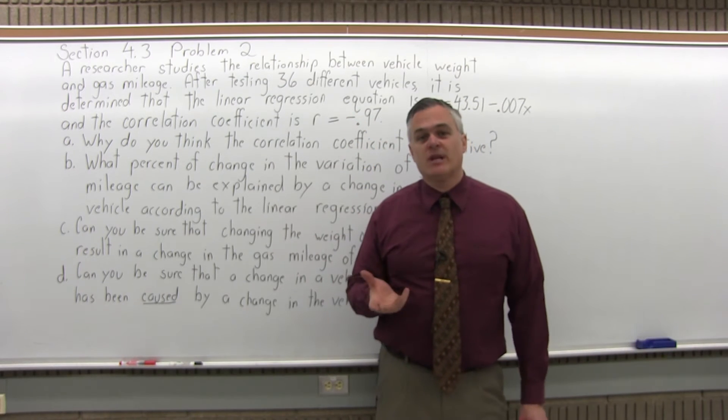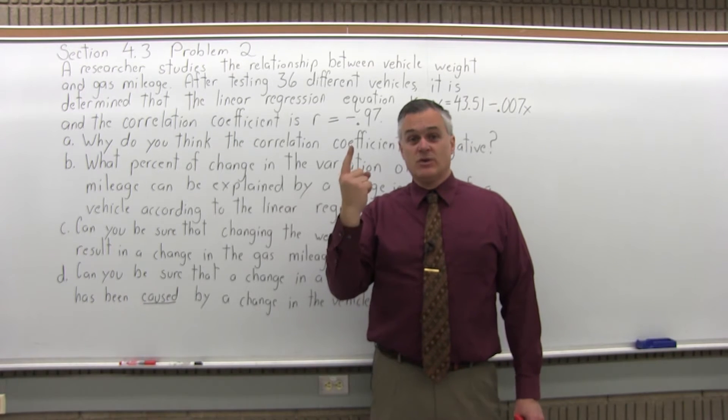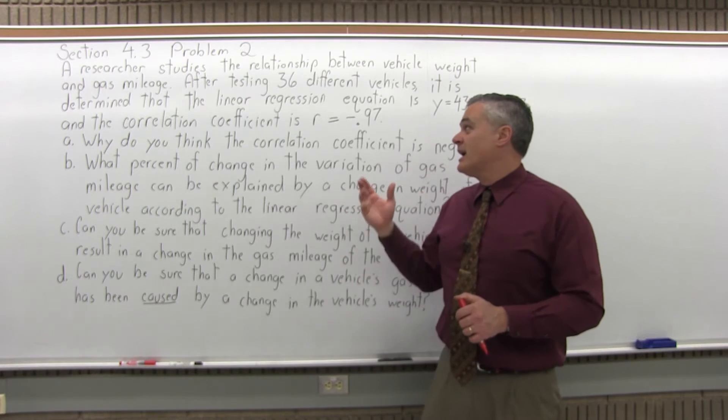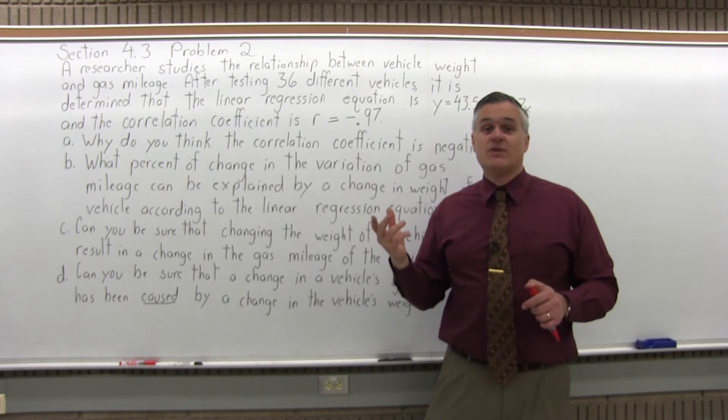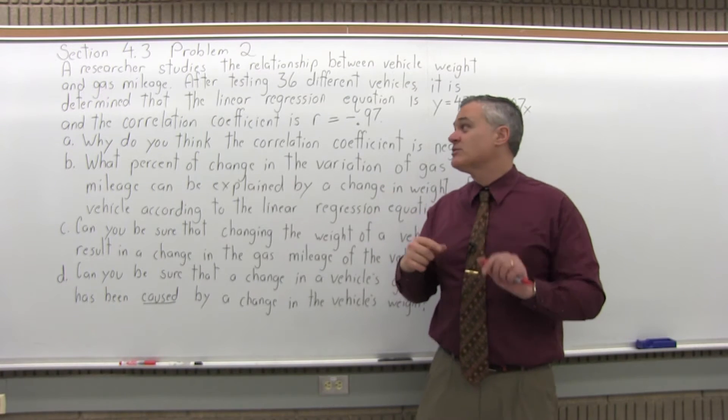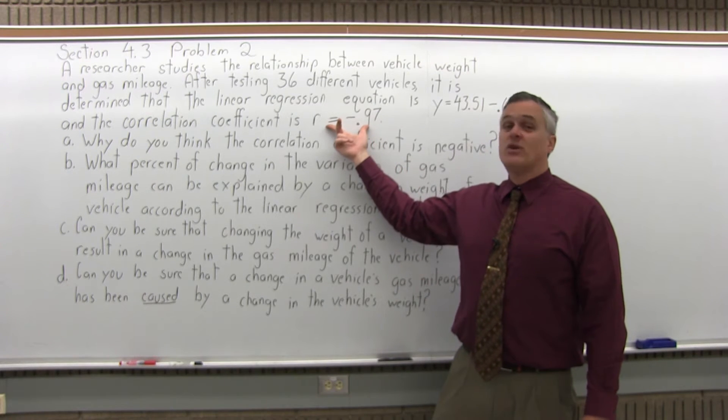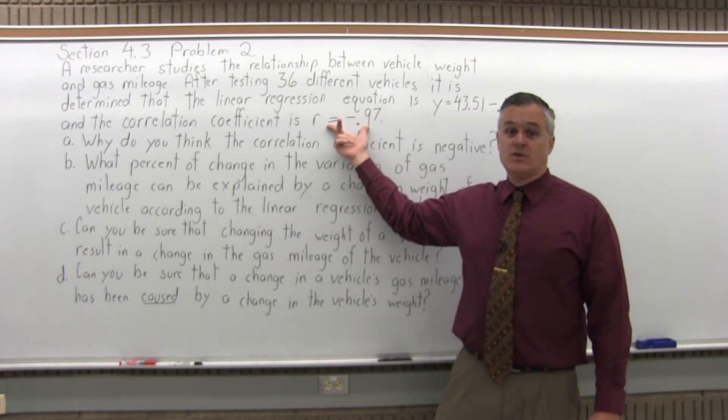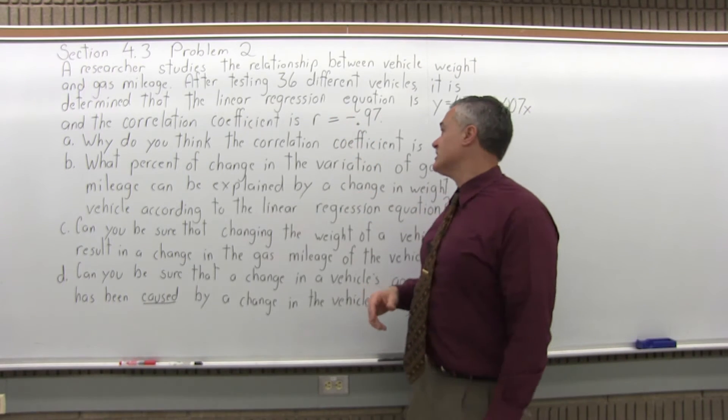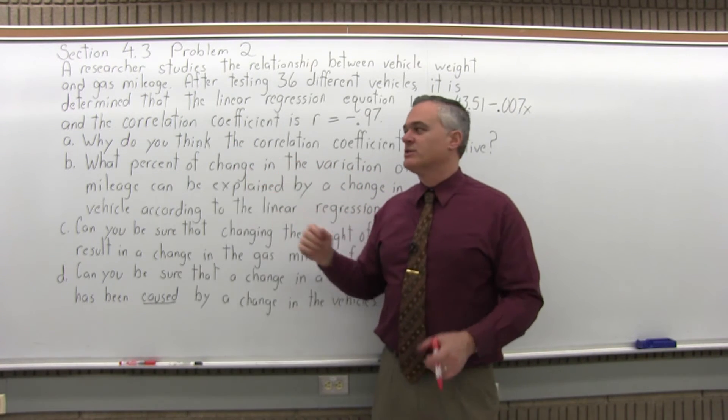Well, the reason why it's negative is because the weight and the gas mileage change in opposite directions. As the vehicle weight increases, the gas mileage will decrease. Heavier vehicles have worse gas mileage. And alternately, as the vehicle weight decreases, the gas mileage will increase. They're going in opposite directions. When your x and y variables go in opposite directions, your correlation coefficient tends to be negative. When they change in the same direction, it'll be positive. They're changing in opposite directions. So I don't really have an answer to write out for part A, but the change occurs in opposite directions.